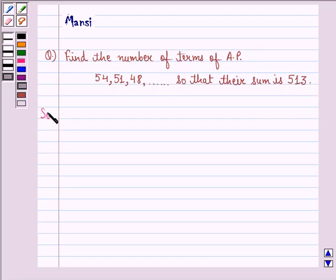Let us start with the solution to this question. We have first term, that is A equals 54. Common difference, that is small d equals 51 minus 54, that is same as 48 minus 51, that is equal to minus 3.